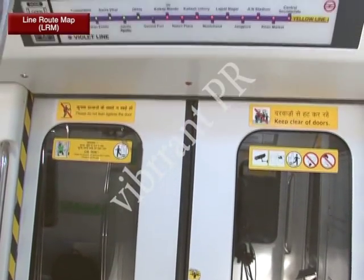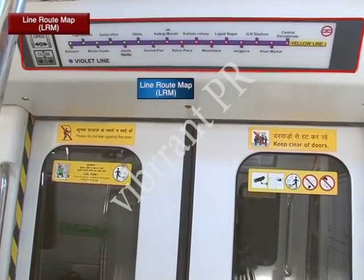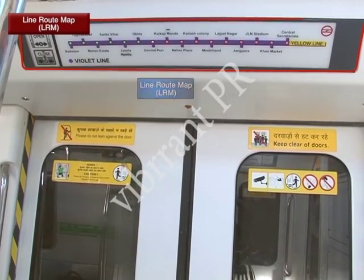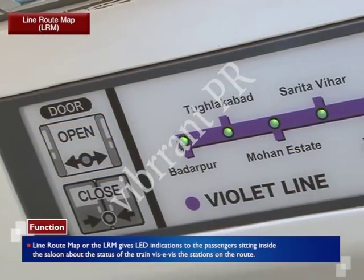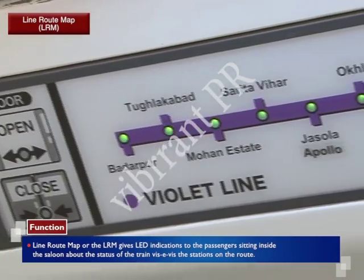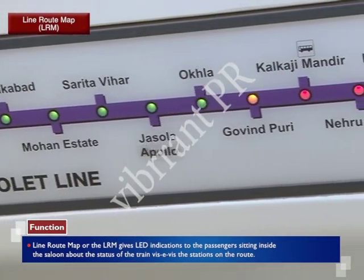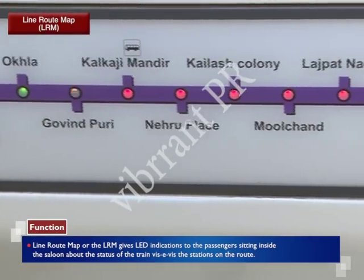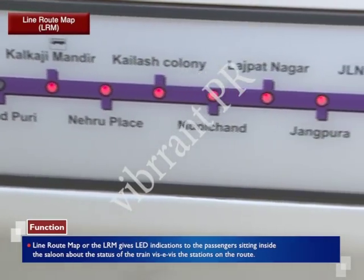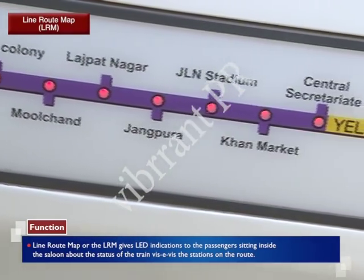This is the LRM, or the Line Root Map. The Line Root Map gives LED indications to the passengers sitting inside the saloon about the status of the train vis-a-vis the stations on the route.